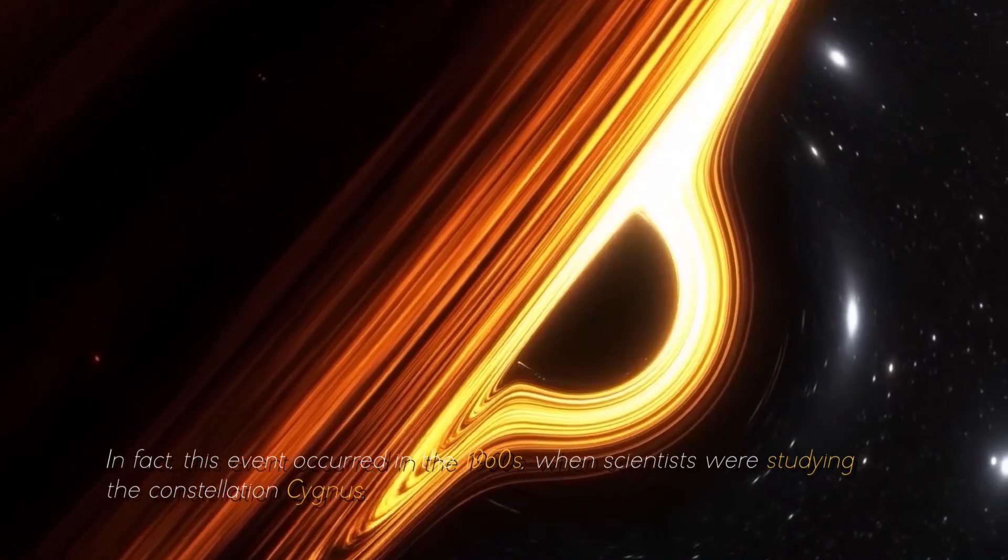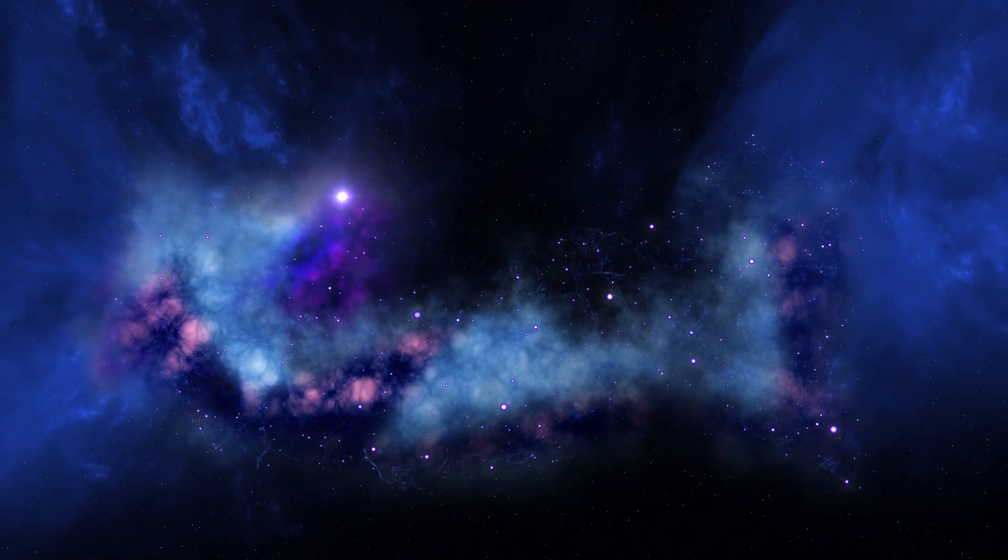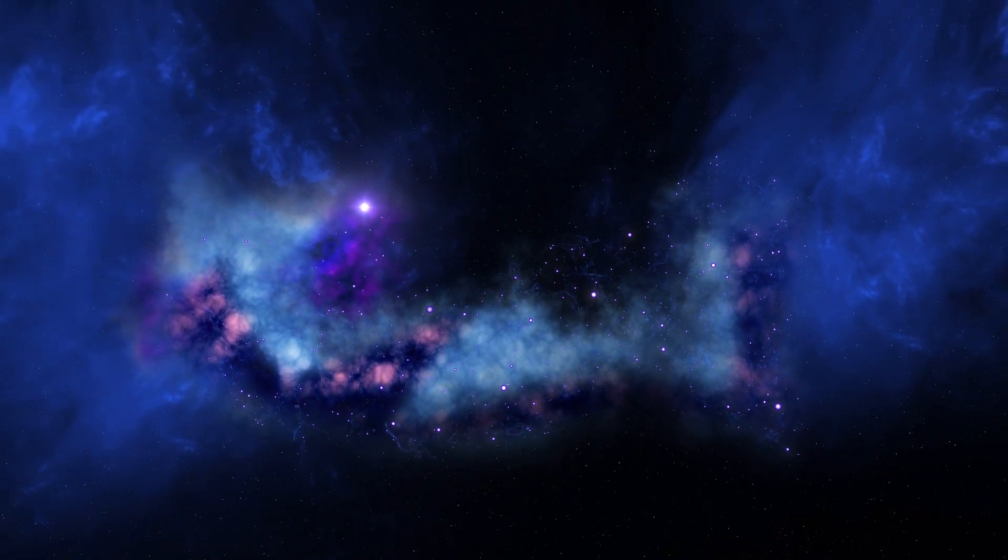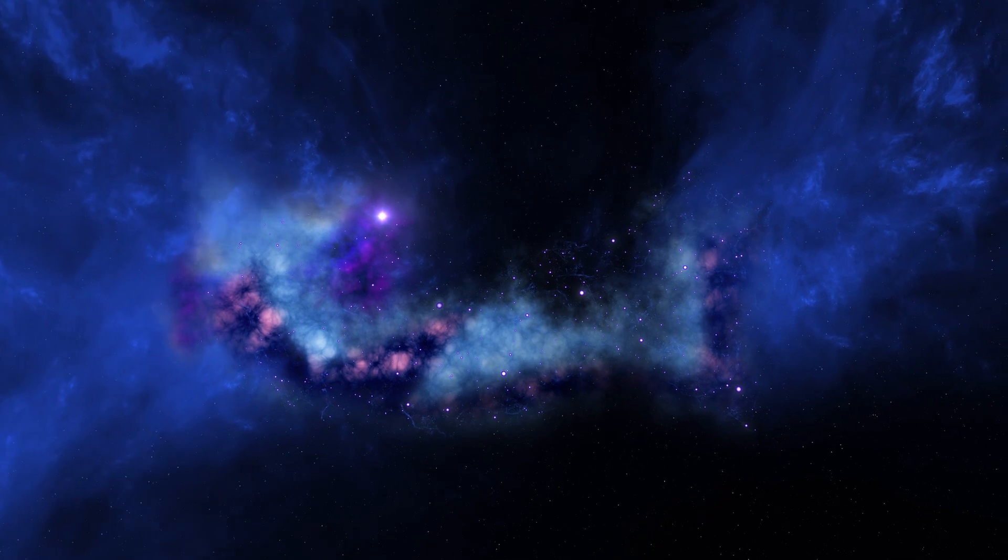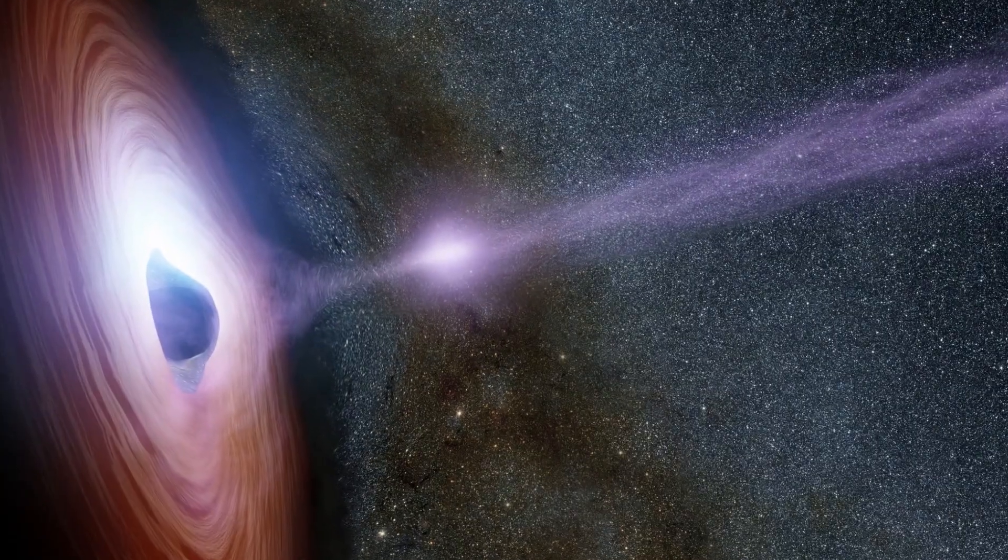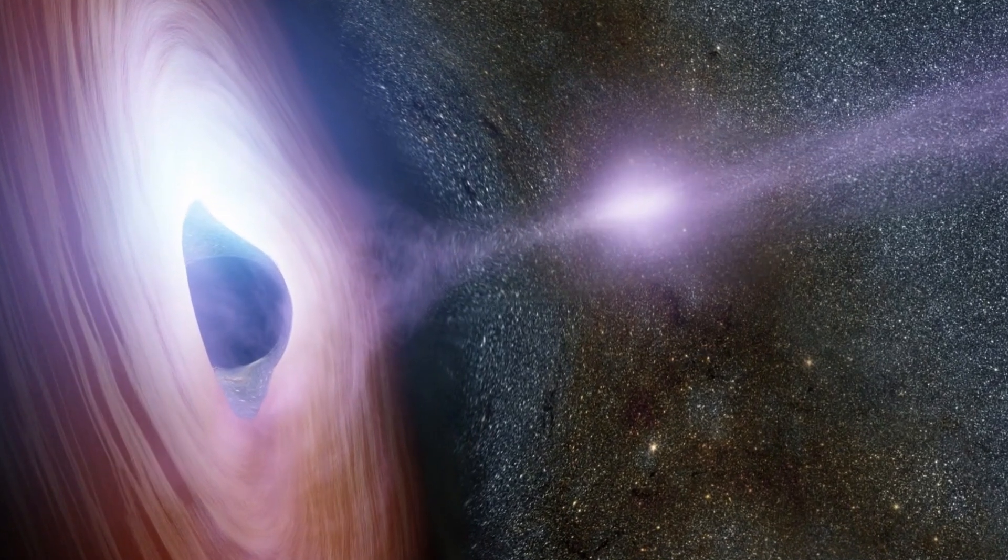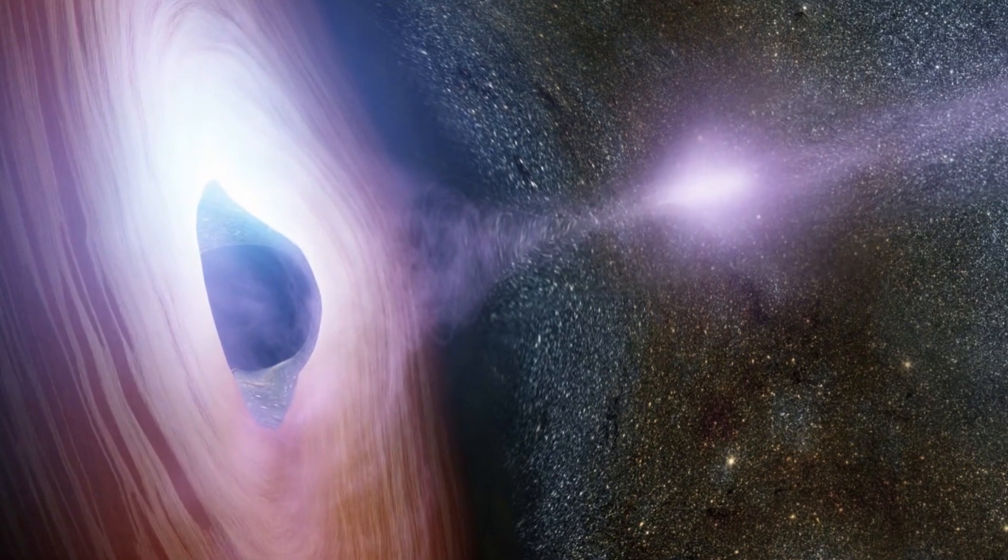In fact, this event occurred in the 1960s when scientists were studying the constellation Cygnus. During their observations, they noticed a bright blue star emitting x-rays. They discovered that these x-rays were not moving on their own, but were attracted to a giant black object around which the star was orbiting. This is how the term black hole was coined.